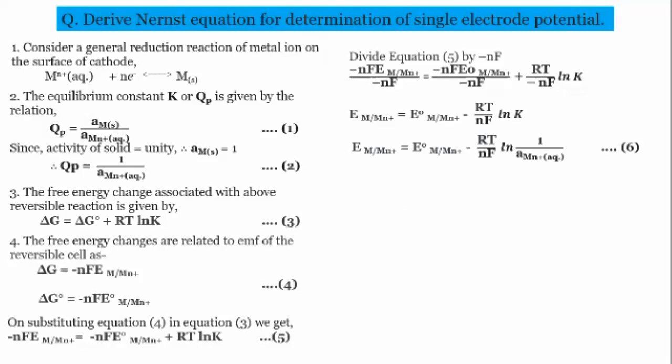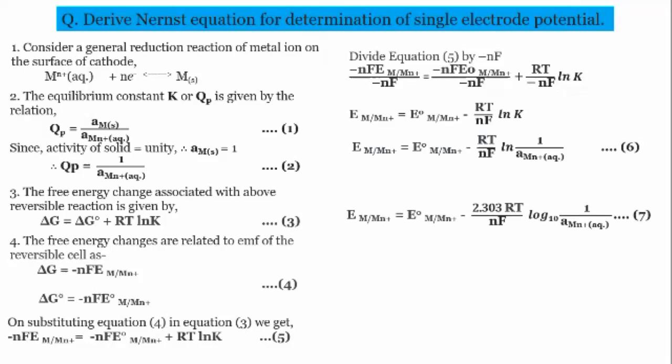Substituting QP for K — which from equation 2 equals 1 / activity of Mn+ (aqueous) — we get equation 6: E(Mn+) = E°(Mn+) − (RT/nF) ln [1 / a(Mn+ aqueous)]. Since we cannot easily solve the natural log, we convert it to log base 10 by multiplying by 2.303, giving equation 7: E(Mn+) = E°(Mn+) − (2.303 RT / nF) log [1 / a(Mn+ aqueous)].